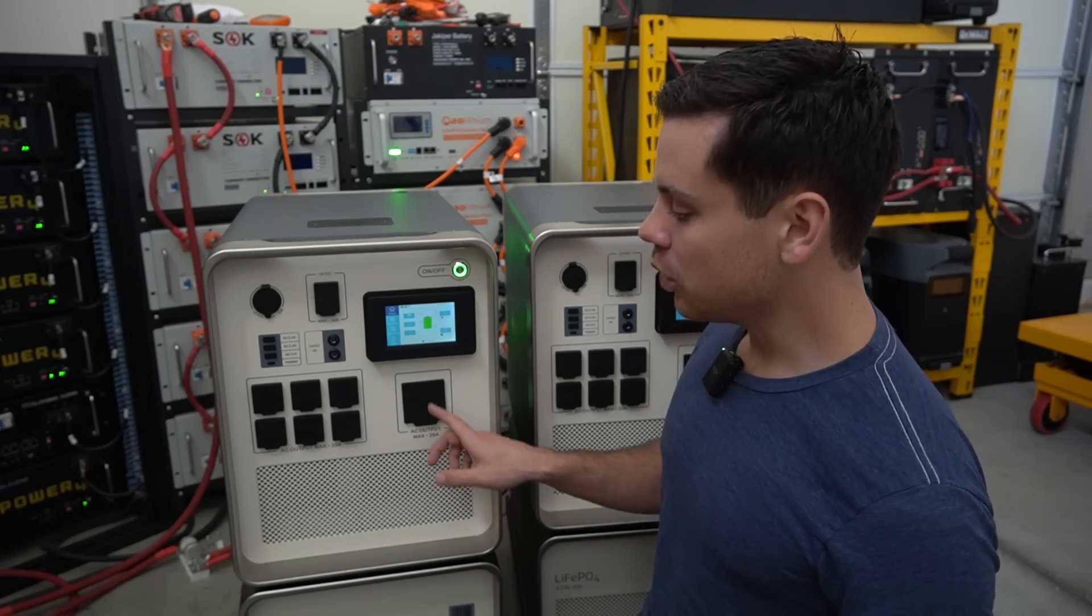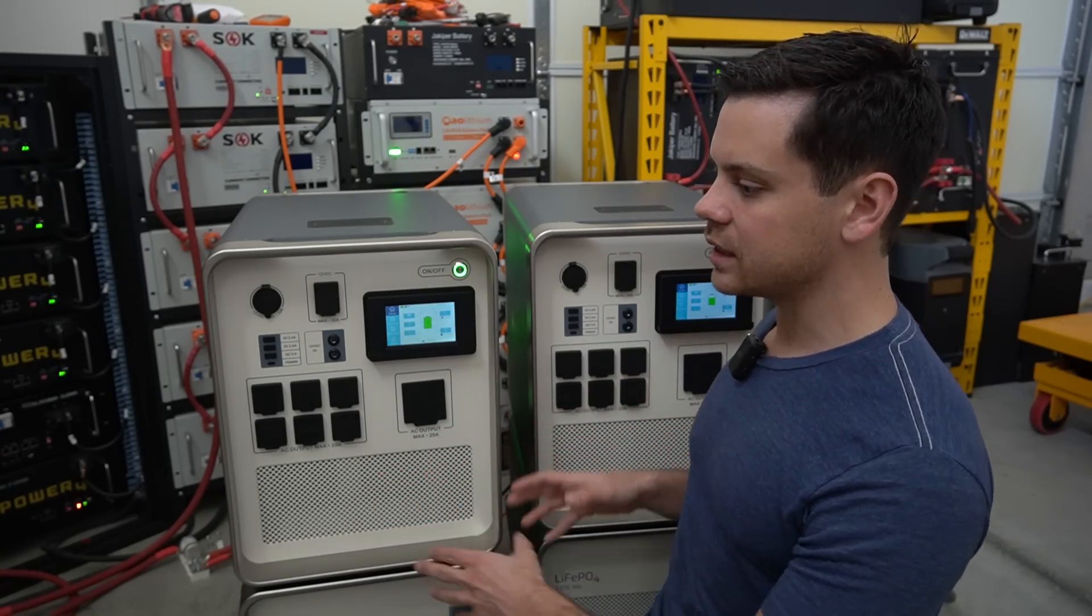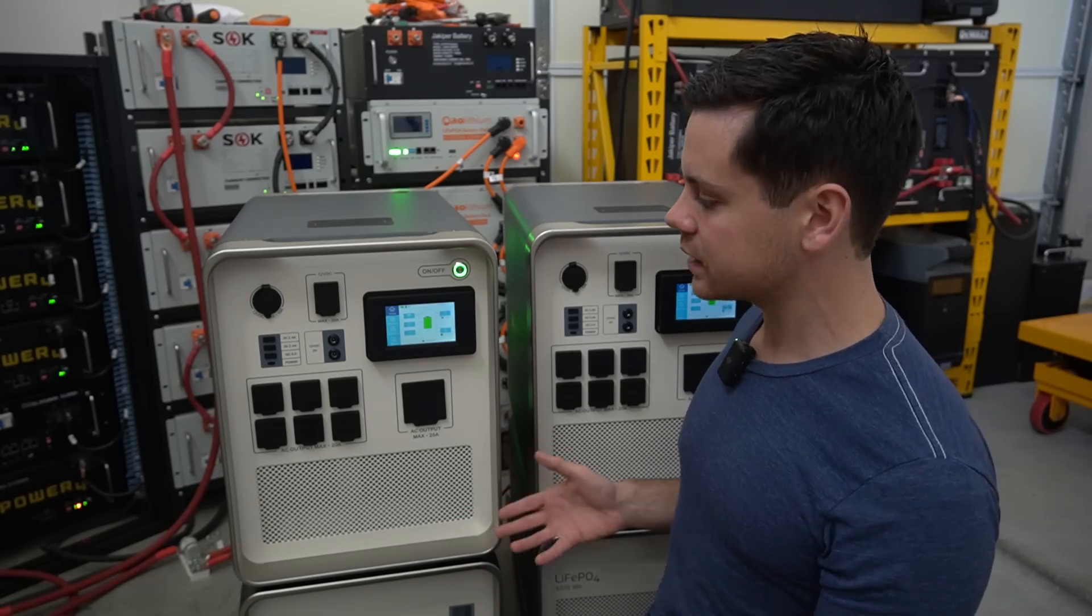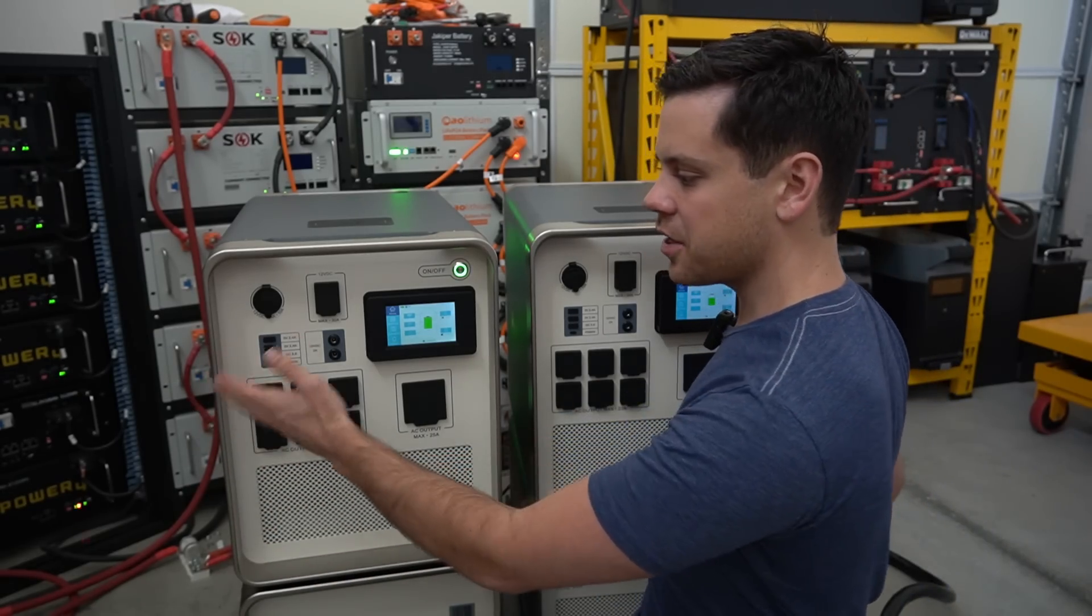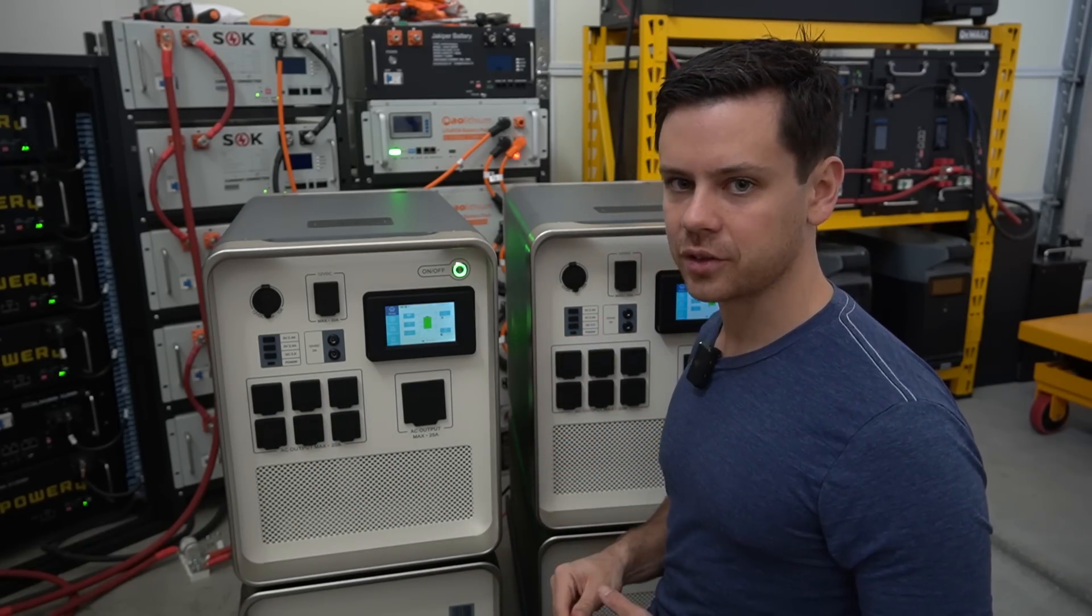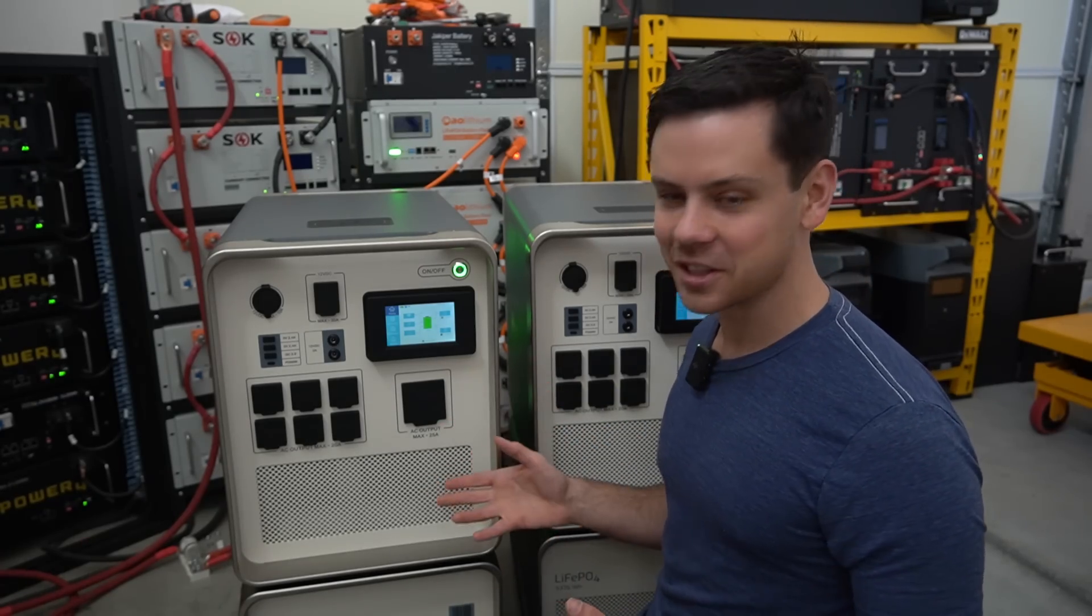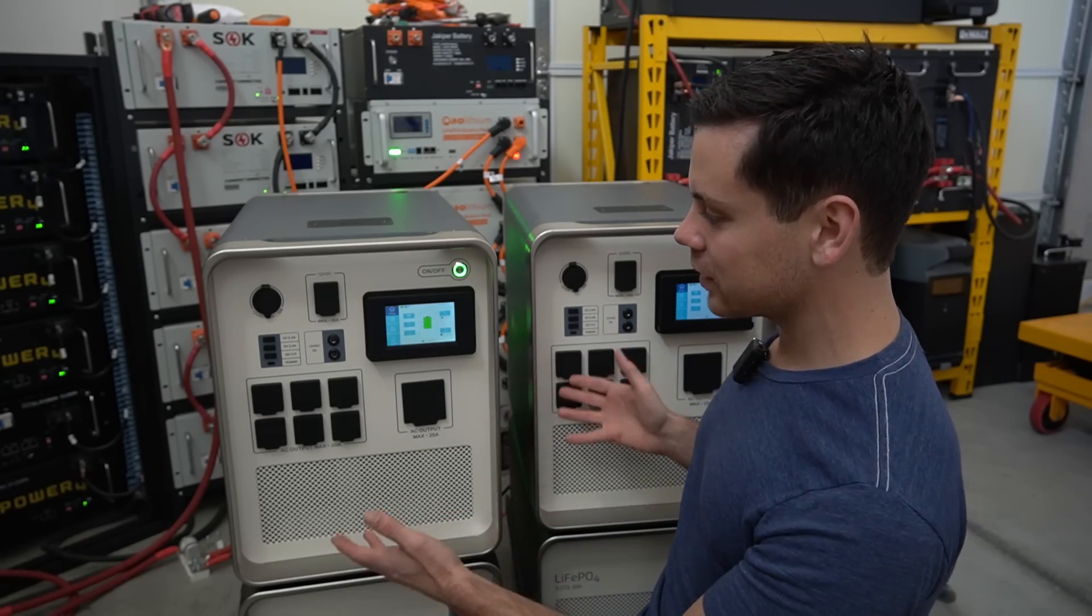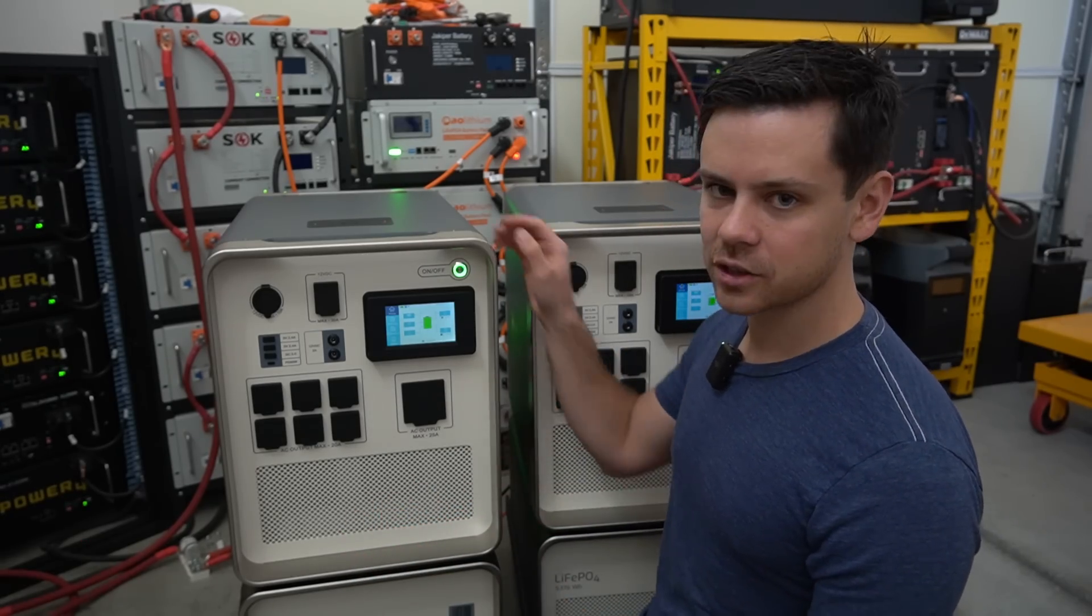So the individual output capacity is not as great as the competition but the scalability is out of this world. You can build any size system you need and imagine if you had six of these units, think about how much solar you could connect to this. You could build a seriously powerful system with the Apollo 5k and this is again the first one to be able to do this. This inverter paralleling capability has never been seen on the market before for these solar generators.